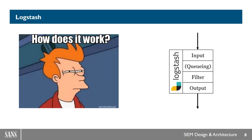Now onto Logstash — how does it work? At the highest level it has four blocks. The input block brings all the logs in in various formats. There's an optional queuing block that can be disk or memory persistent queuing. Then we have a filter block — this is where all the special stuff happens: the parsing of the logs that came in on the input. After they are parsed and enriched, they hit the output block, which can send them to various different destinations.